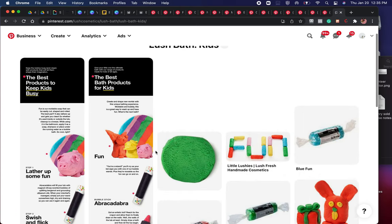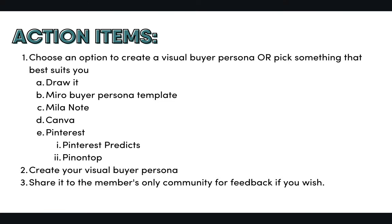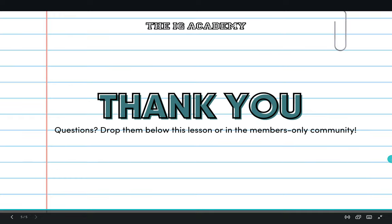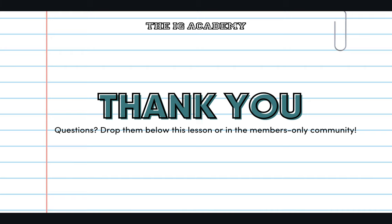Now it's time for you to take action and create your own visual buyer persona. First, choose an option that feels the most natural to you — you can choose from the options I went through in the training or just pick something that best suits you. Inside the description of the training I've included links to Miro, Milanote, Pinterest Predicts, and Pin on Top. Then create your visual buyer persona and if you want any feedback, share it in the members-only community.